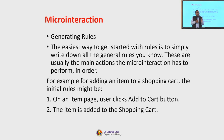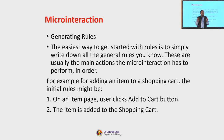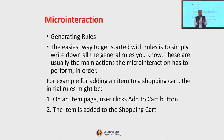The easiest way to get started with rules is to simply write down all the general rules you know. Rules means how does that function execute in terms of the decision making that happens. These are usually the main actions in the micro interaction domain that we are discussing about, and these actions have to be performed in an order.